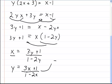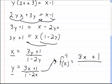You're almost done. Now you just have the last part to do, which is changing y to f inverse of x. And you're done. So the inverse of f(x) equals (3x plus 1) over (1 minus 2x).